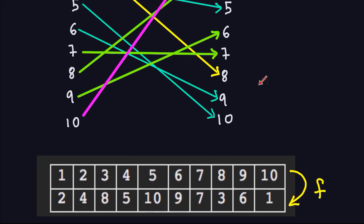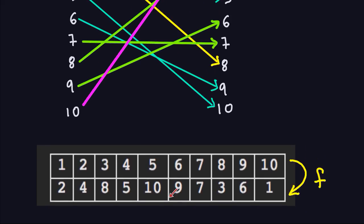I can also present this in table form to make it easier to read. In this table, the left column is my inputs (set A) and the right column is my outputs. The transformation F maps: 1 → 2, 2 → 4, 3 → 8, 4 → 5, and so on. So this function is a bijection — though we didn't do a formal proof, the picture demonstrates it clearly.